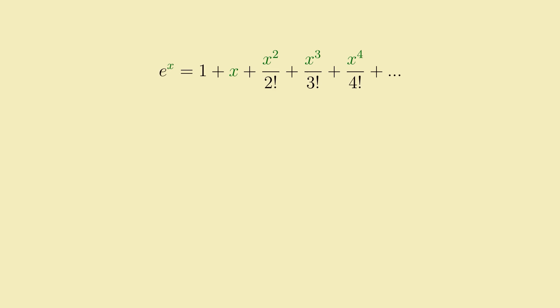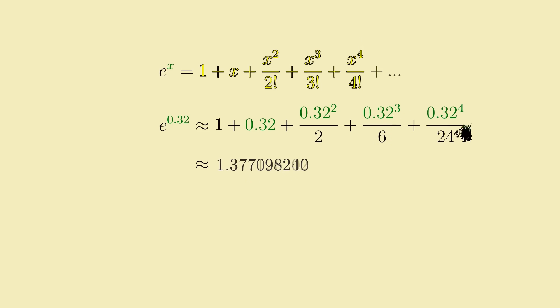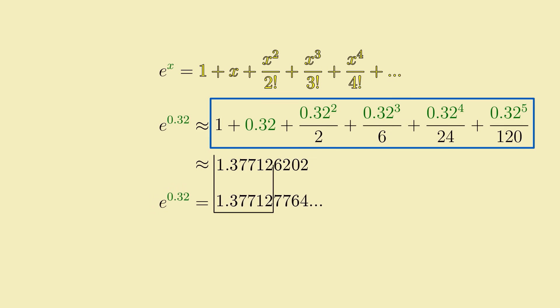Thus we have a way to calculate the value of e to the x at any possible x value to any precision we care. We just plug in whatever value we need into the Taylor expansion of e to the x, and by adding up enough of the terms, we can get an arbitrarily good approximation of it there. For example, by plugging in x equals zero point three two into the expansion, I can get an approximation of e to the power of zero point three two, good to five decimal places, just by adding six terms.